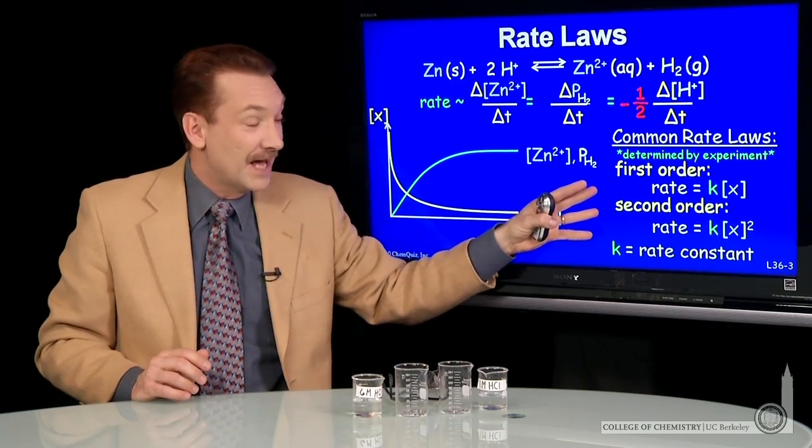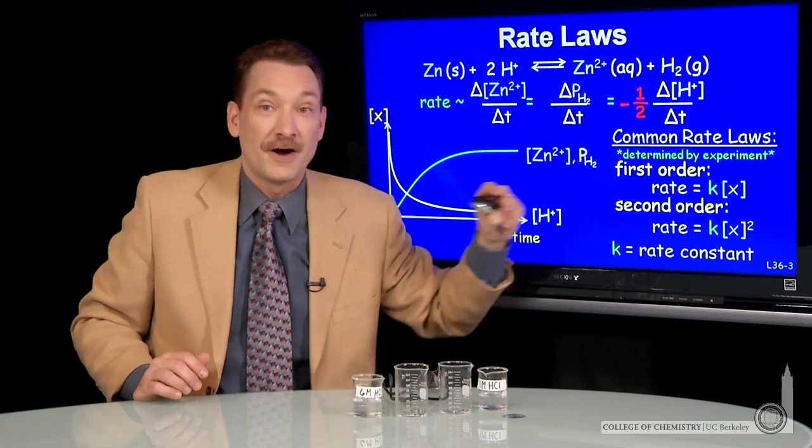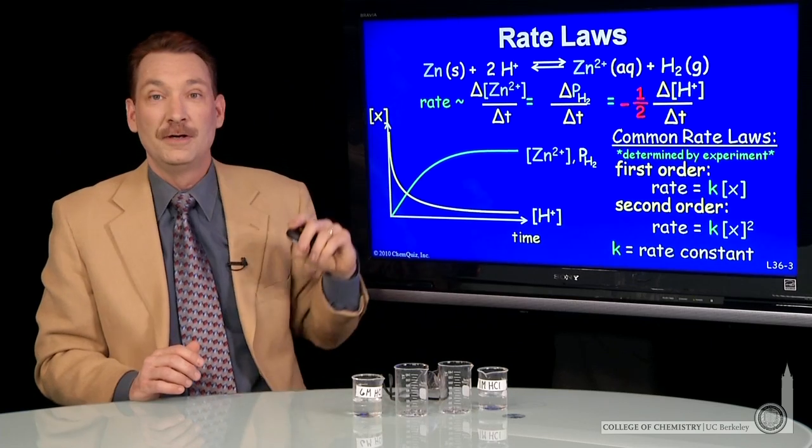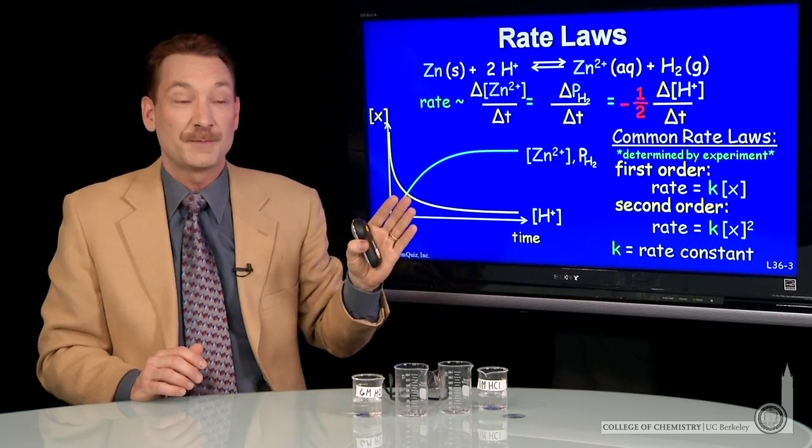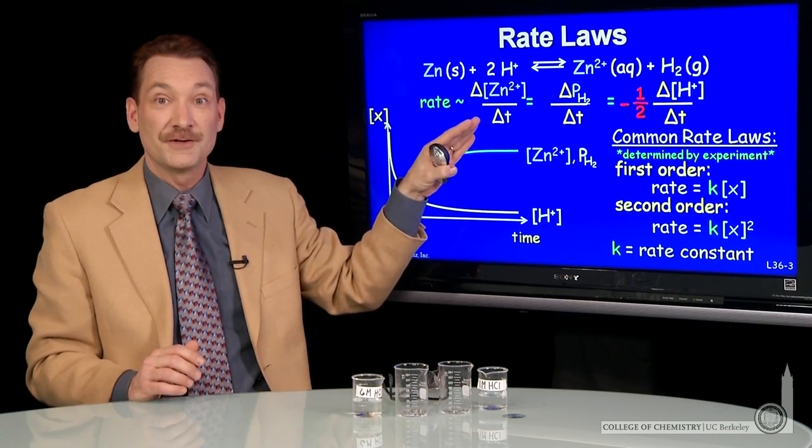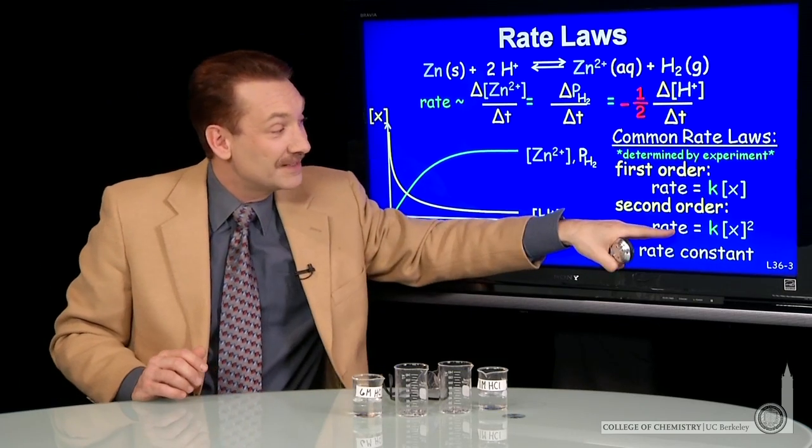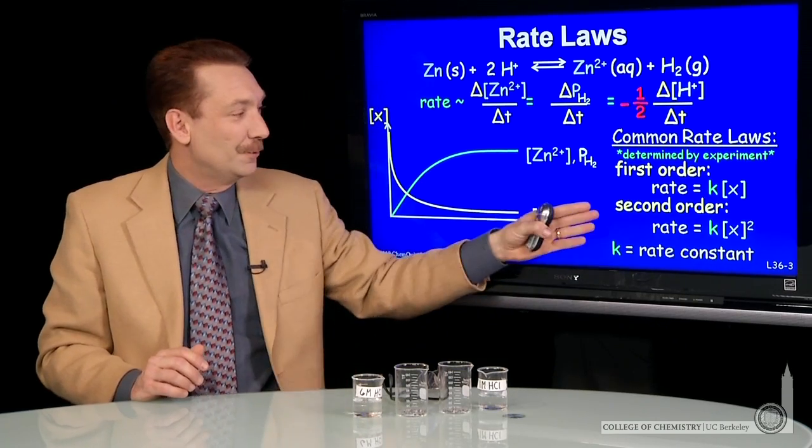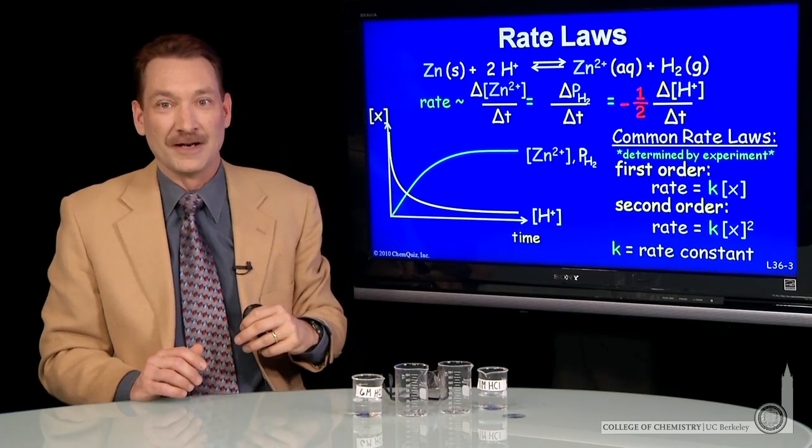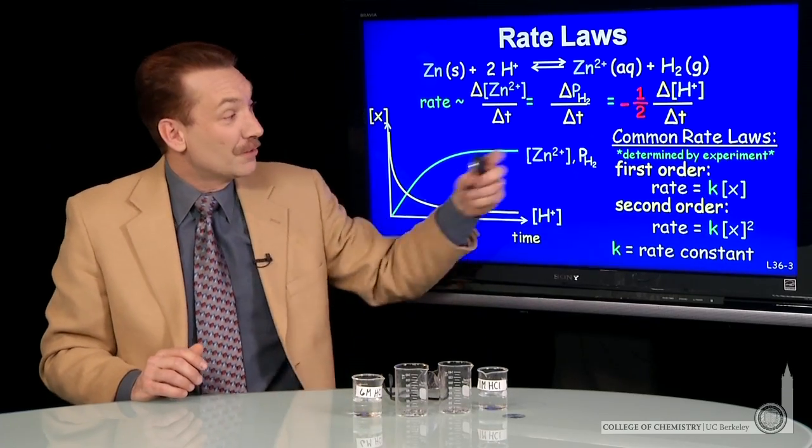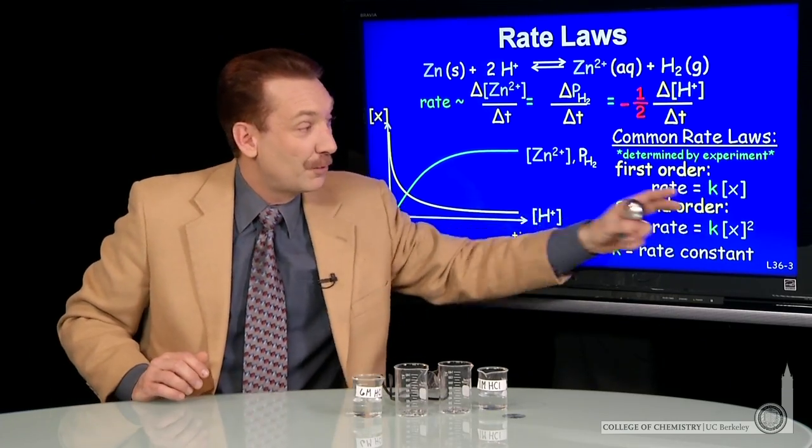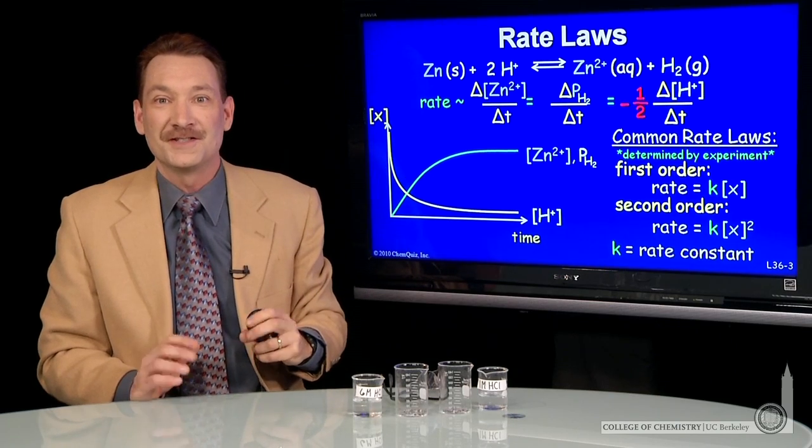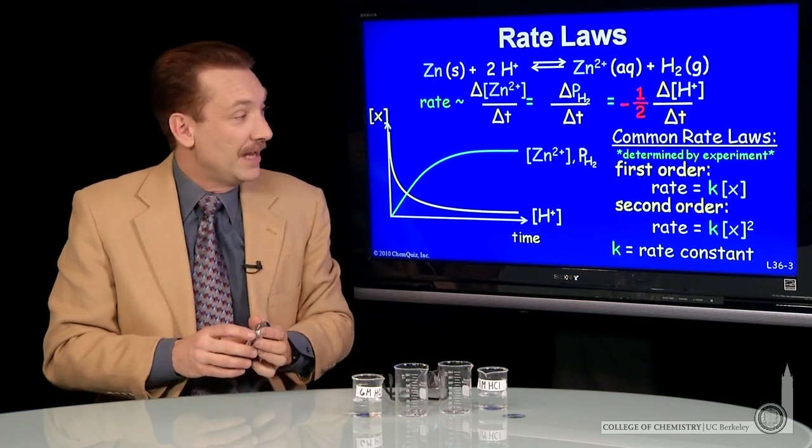But in kinetics, these powers are not related to stoichiometric coefficients. You have to determine it by experiment. You have to measure concentrations versus time. You have to plot them and see if they follow one of these rate laws. So here's a second order rate law. So we're saying that rates are often proportional to concentrations in some power. And we can see that.